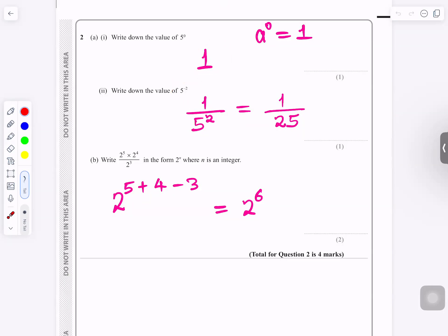Write down the value of 5 to the minus 2. It's 1 over 5 squared. 5 squared is the same as 5 times 5, which gives you 25. 1 over 25 is the answer.